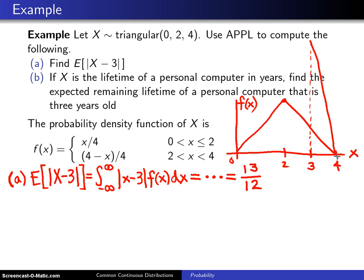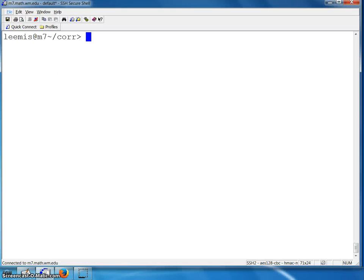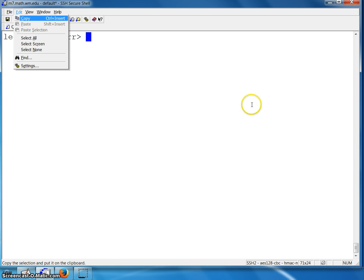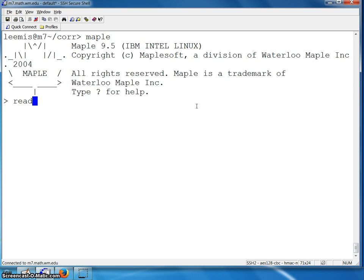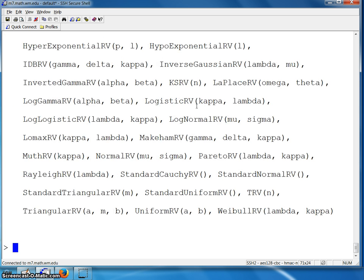So at this point, we're going to go to APPL and try to work these problems. The first thing to do is enter Maple, and that is done with the command. There it is, Maple. And then you want to read in the APPL software, and that's with the read command. There is a back quote, APPL, and then another back quote. And these all, of course, end with a semicolon. And that will read in APPL.